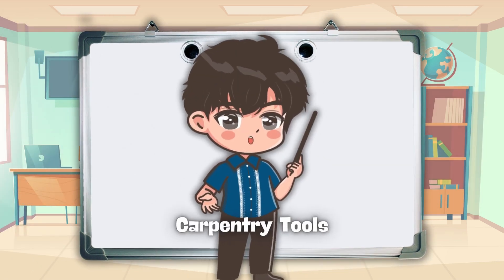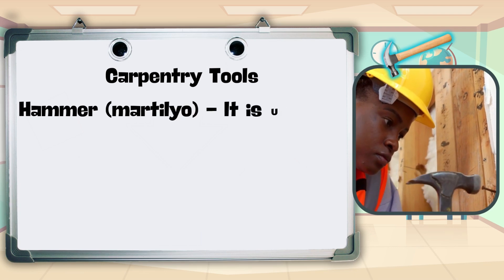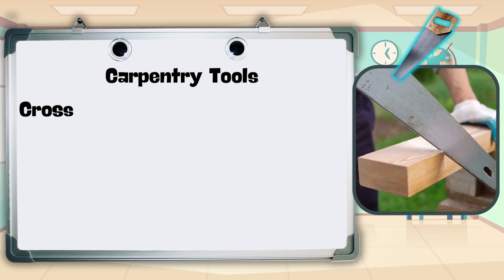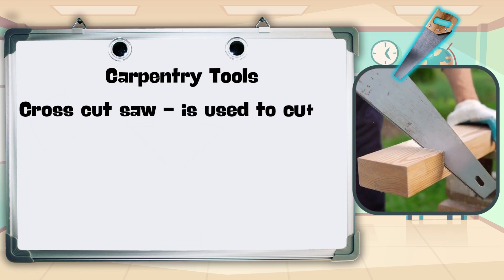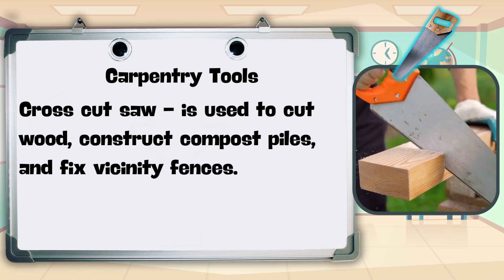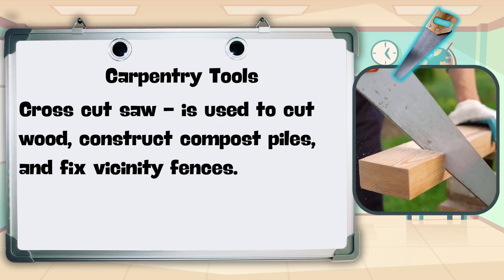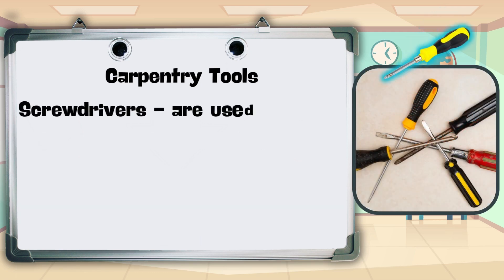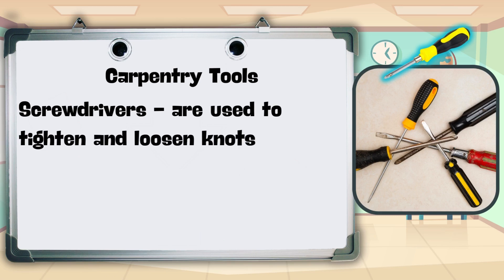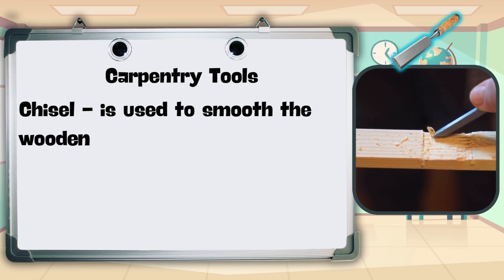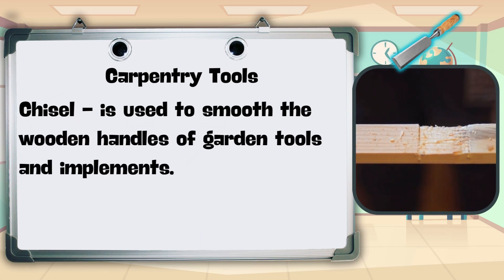For carpentry tools: hammer or martillio — used to draw, remove, and drive nails; cross-cut saw — used to cut wood, construct compost piles, and fix vicinity fences; pliers — used for repairing tools and other carpentry work; screwdrivers — used to tighten and loosen knots and bolts; chisel — used to smooth the wooden handles of garden tools and implements.